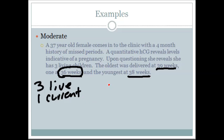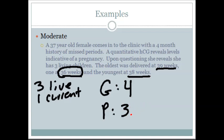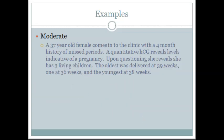Let's figure out her G's and P's. How many pregnancies has she had total? She's had three prior children and is currently pregnant now, so that's a gravida of four. Her para is going to be three. Breaking it down into T, P, A, L: T would be two, since she's had two term pregnancies. P for preterm would be one, since she's had one preterm child. A is zero — she hasn't had any abortions. And L, living children, would be three. So G4, T2, P1, A0, L3.